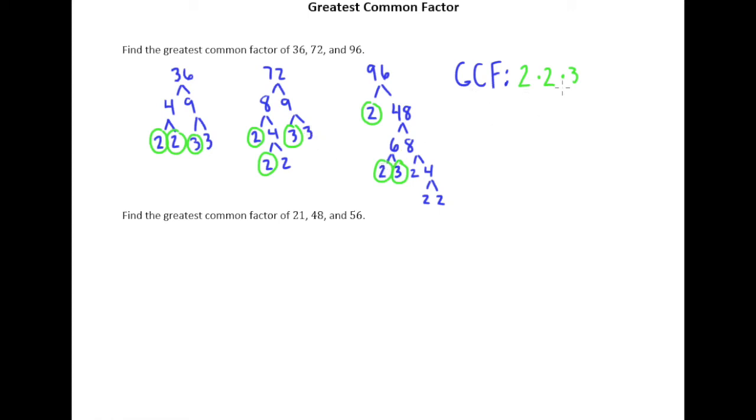So this is it, 2 times 2 times 3, 2 times 2 is 4, times 3 is 12. So the greatest common factor of 36, 72, and 96 is 12. In other words, 12 is the very biggest number that if you were to divide 36, 72, and 96 by it, you would have no remainder.